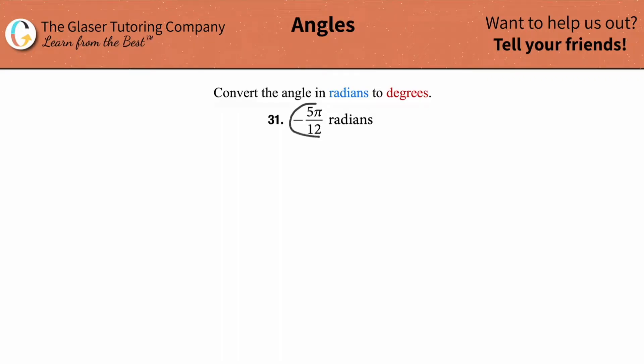So how do we convert negative 5 pi over 12 radians into degrees? How do we do that? Well, first thing is we want to start with a known relationship. And we know that there are pi radians in or are equivalent to 180 degrees.